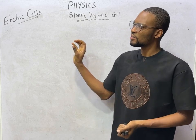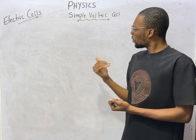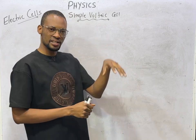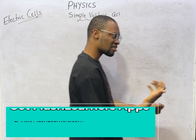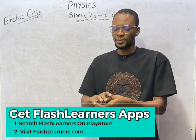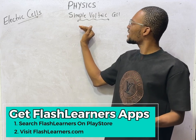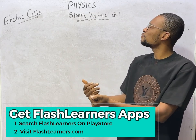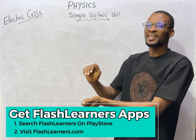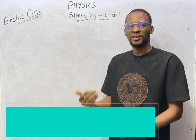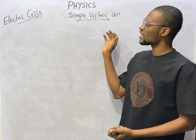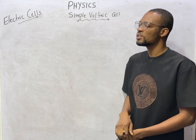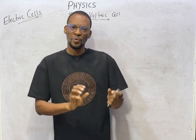I need you to understand that when we hear primary cells and secondary cells, they can both be under simple voltaic cells. The primary cells and secondary cells I've explained can also be termed simple voltaic cells. A simple voltaic cell can either be primary or secondary — if it is dry, cannot be recharged, and the current produced is based on an irreversible process, we say it is primary. If it is rechargeable with lower internal resistance and other features of secondary cells, then that simple voltaic cell is secondary.